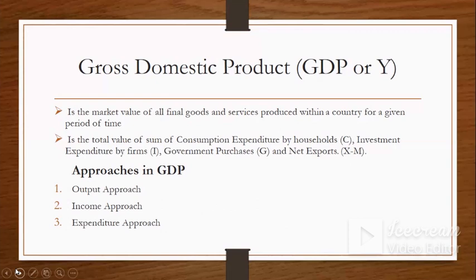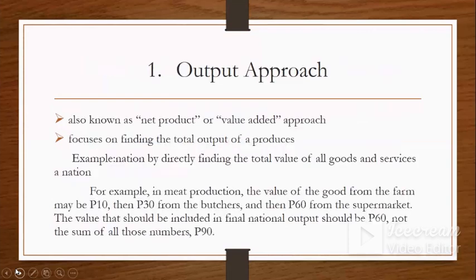Market value is the amount for which something can be sold on a given market. The first approach is the output approach, also known as net product or value added, which focuses on finding the total output of a nation by finding the total value of goods and services. For example, in meat production, the value from the farm may be 10, then 30 from the butcher, and 60 from the supermarket.